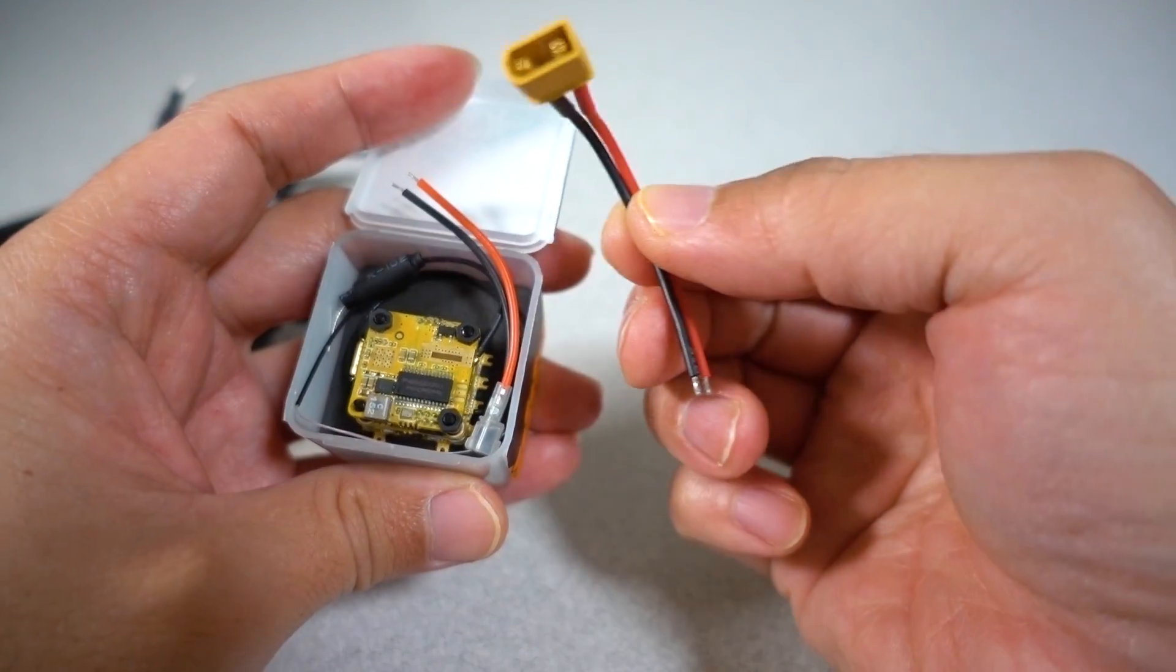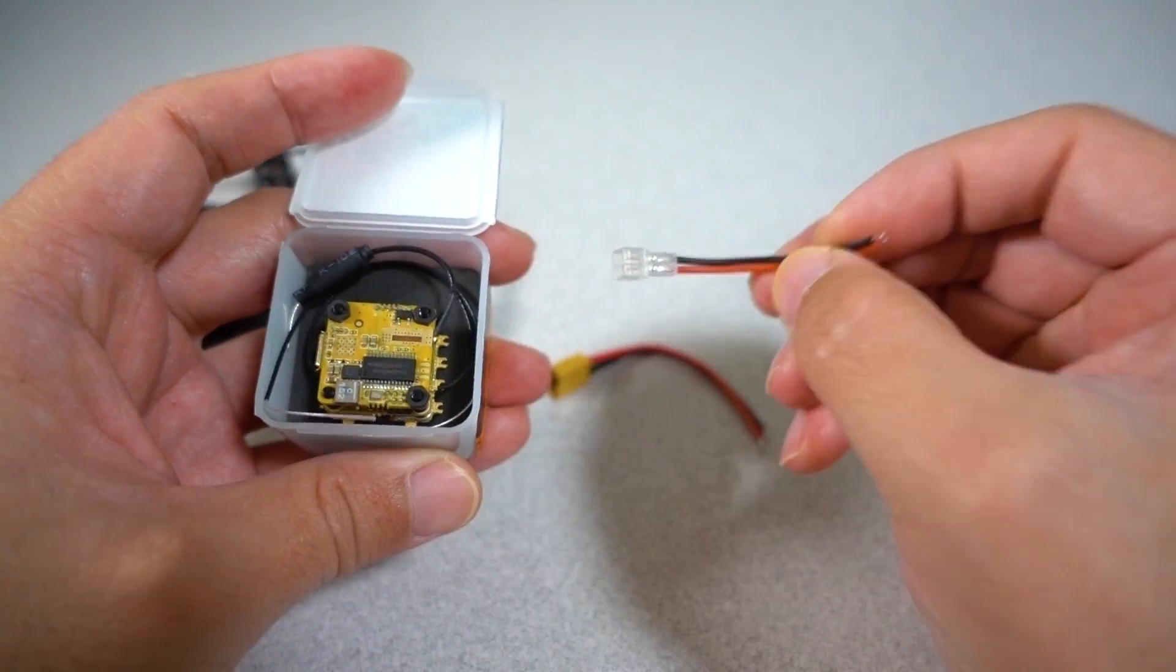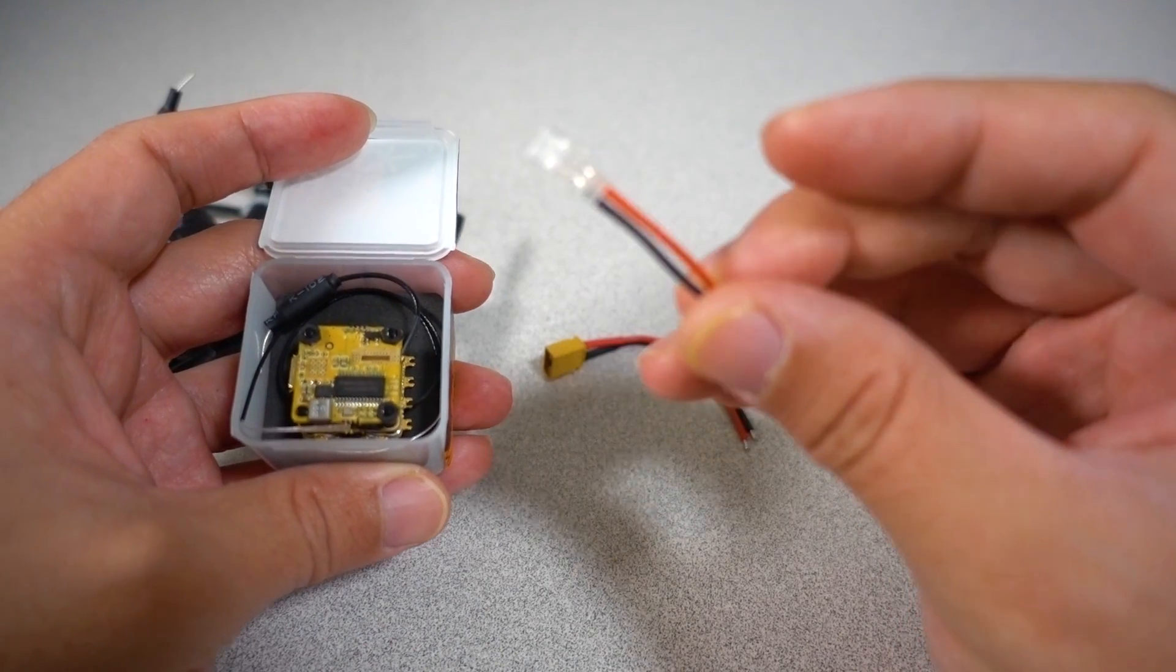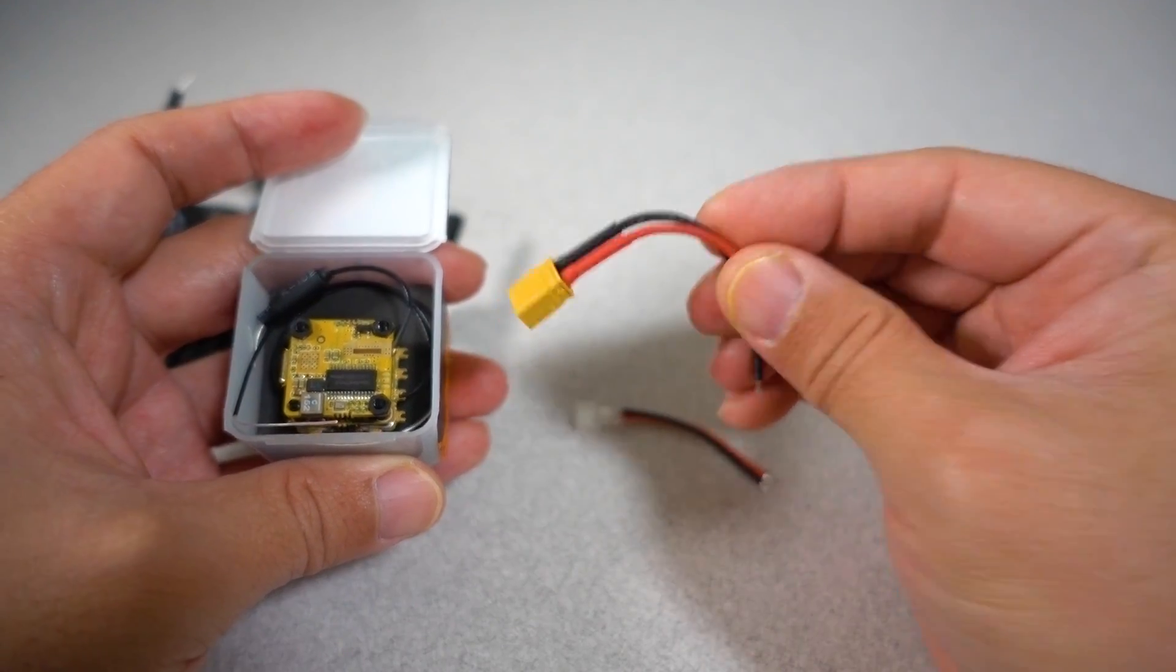We've got some connectors, we have XT30, we've got a PH 2.0 connector, so this does 1S or 2S. I think this connector here is going to be for 1S, and then the XT30 is going to be for 2S.